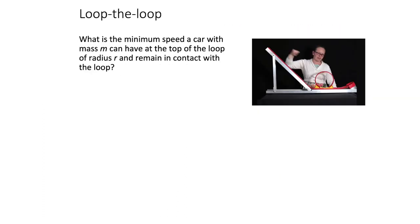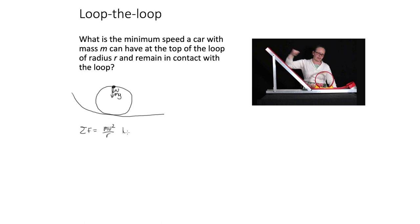We're asked what is the minimum speed a car of mass m can have at the top of a loop with radius r and remain in contact with the loop. Considering the forces at the top: the weight force pulls down, the normal force also pulls down, and as a result the car undergoes circular motion. The resultant force equals mv squared over r, the centripetal force directed towards the center, which is also downward.